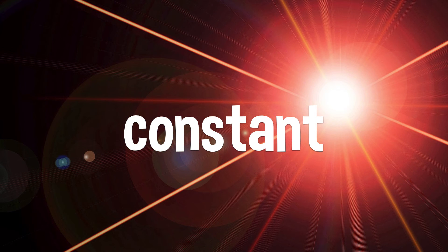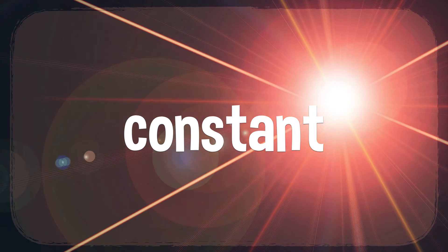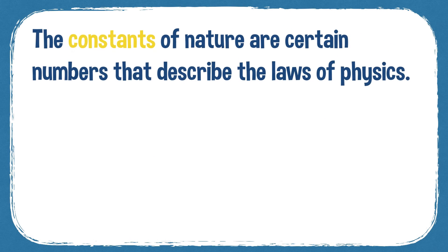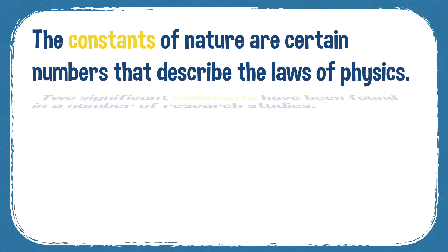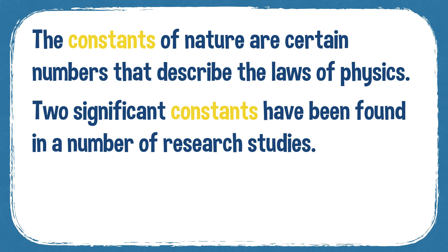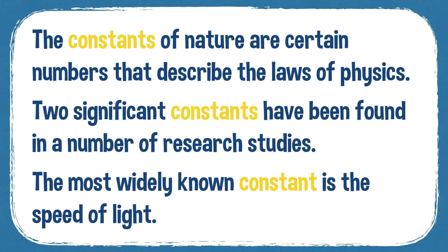Your first word is constant. A constant is a thing or a value that always stays the same — it never changes. For example, the speed of light is a constant. The constants of nature are certain numbers that describe the laws of physics. Two significant constants have been found in a number of research studies. The most widely known constant is the speed of light.